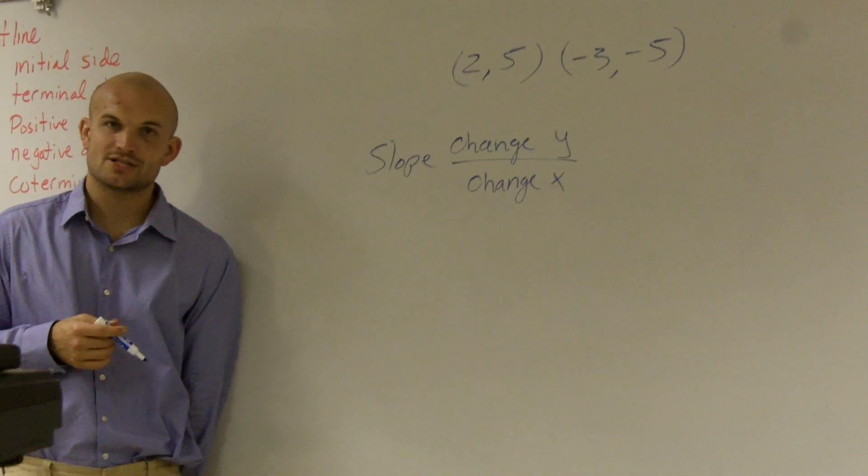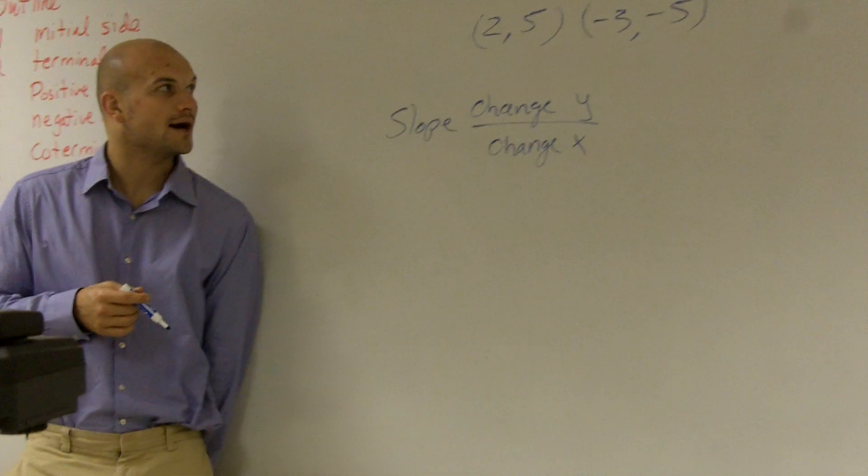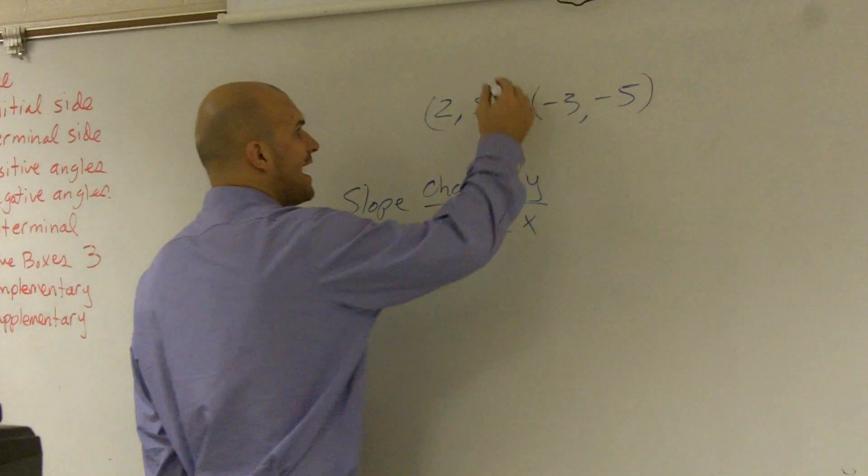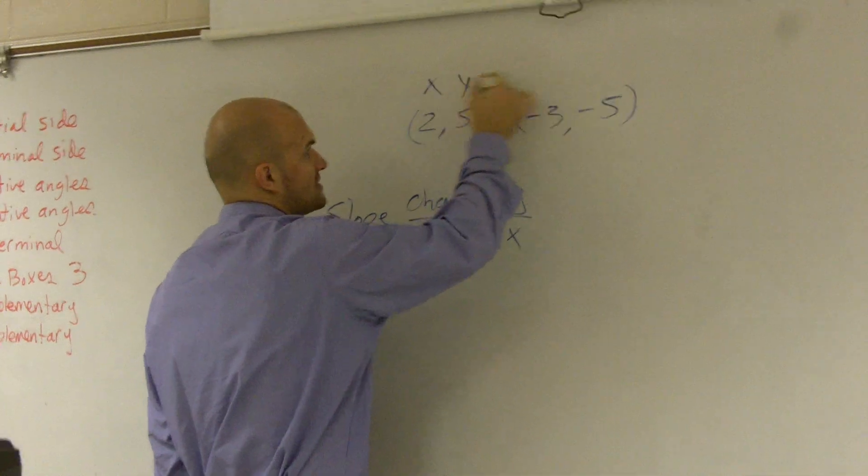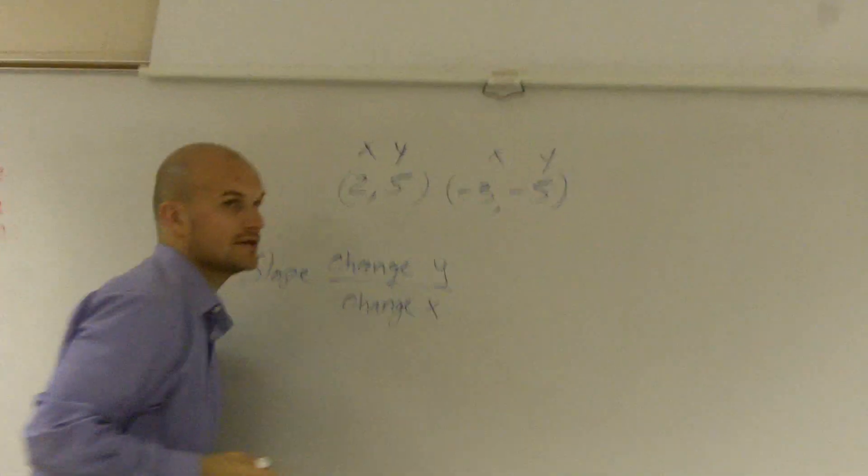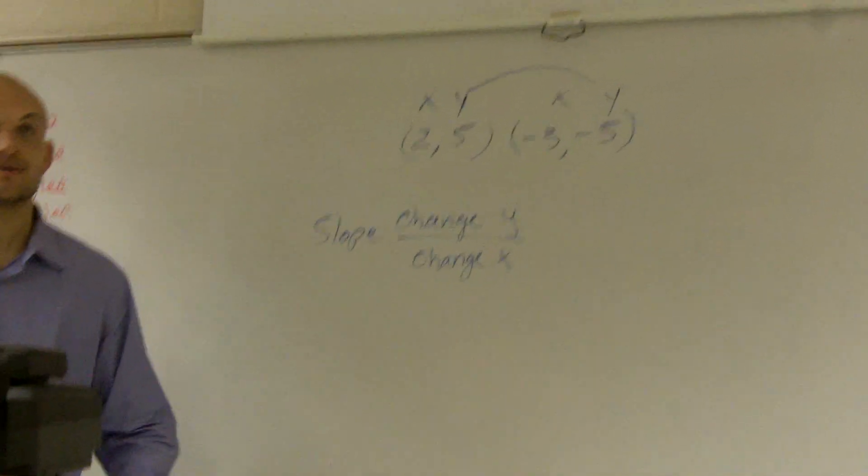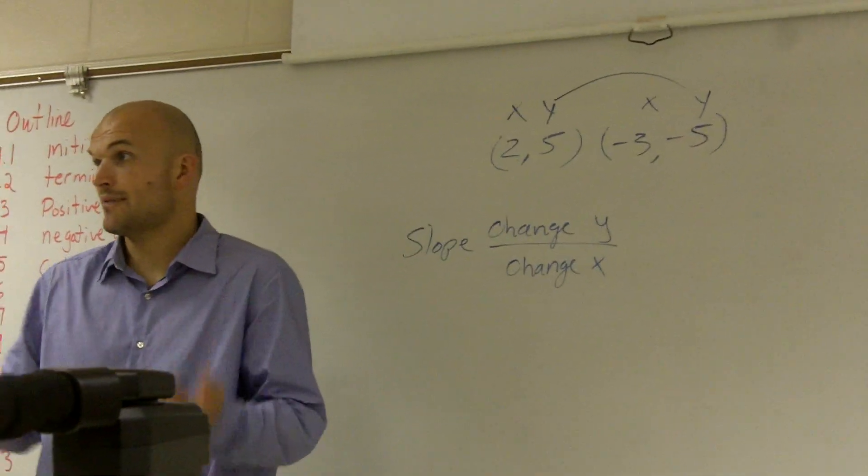So if I was going to find the change in y or the change in x, what we want to do is we want to find the change in our y-values. So to go from 5, remember guys, our points have an x and a y, right? So I want to say, how am I changing to go from a positive 5 to a negative 5? What am I doing? Am I going up or am I going down?